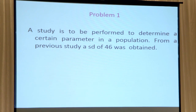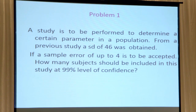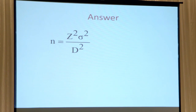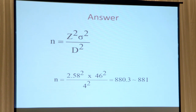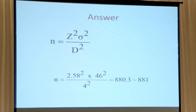For the first problem, you have a population with a standard deviation of 46, and you want to calculate a sample size that will determine a sample error of 4. You want to be 99% confident. Using the Z value of 2.58 for 99% from the Z table, along with the standard deviation and calculated difference, you get a sample size of 880. If you decrease the confidence interval to 95%, the Z drops to 1.96 and your sample size is cut significantly — the difference between 95% and 99% makes a huge leap in sample size.